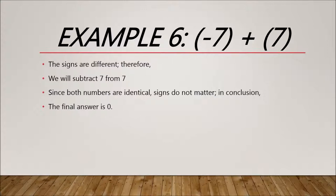Example 6: -7 + 7. These two numbers have different signs, so we subtract 7 from 7. We notice that they are identical, so we don't need to focus about the signs, and 0 will be the final answer.